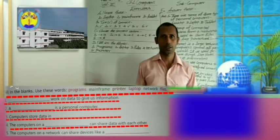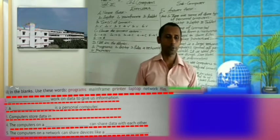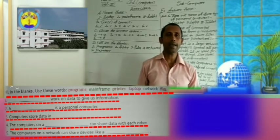The computers on a blank can share data with each other. Yes, you are right — network. So write here: network. Now, the computers on a network can also share devices like a printer. So write here: printer.